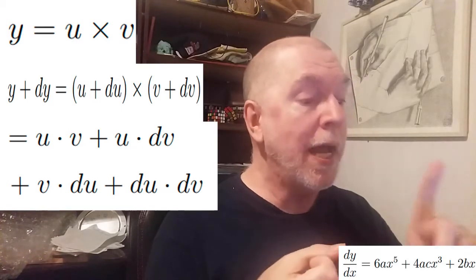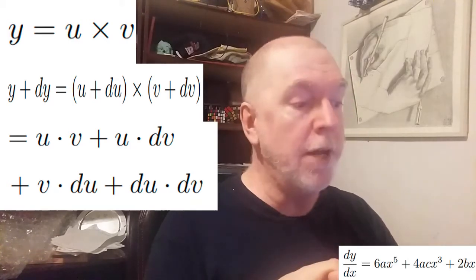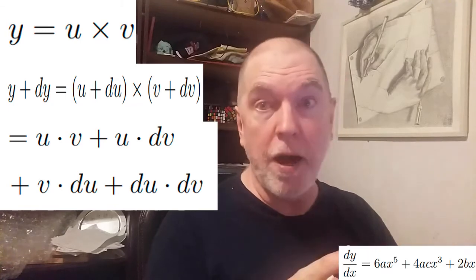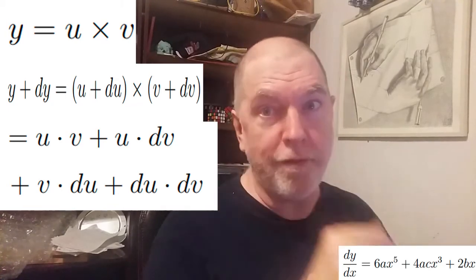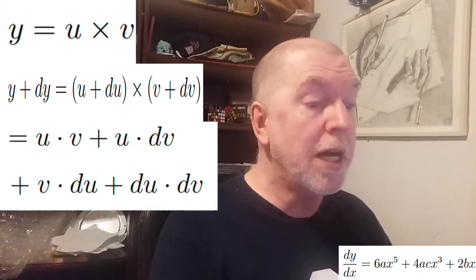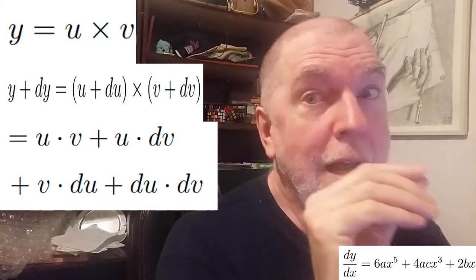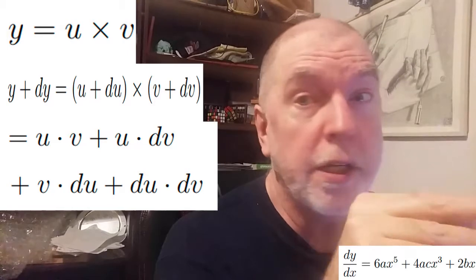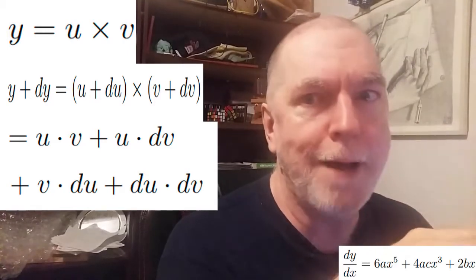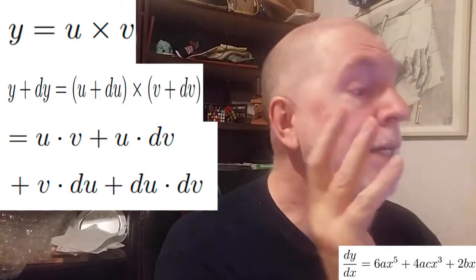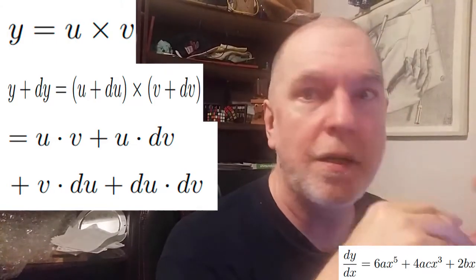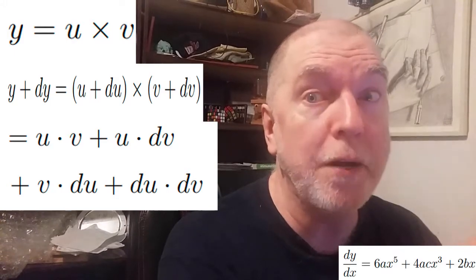The two original functions multiplied together, u times v, and then a product, udv, another product, vdu, and then a product of two differentials, du times dv. And a differential times a differential is the same as previously when we had dx squared. It's itsy bitsy, teensy weensy, second order of smallness. So we just toss it out.